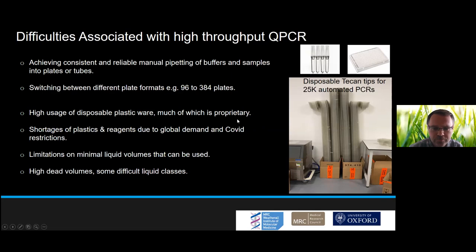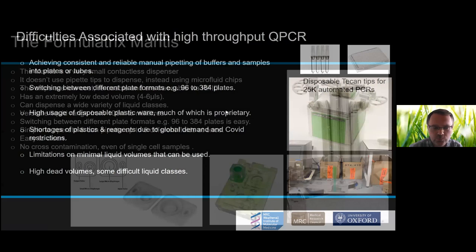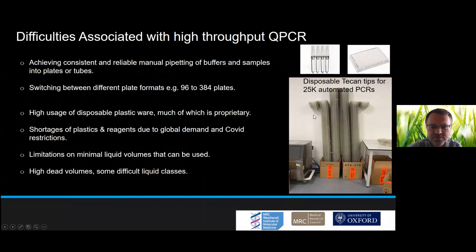Particularly under current conditions, with very high demand for assays, you can see the huge stack of Tecan tips needed for 25,000 automated PCRs — you really do need a lot of plastics. Under pandemic conditions, there are obviously shortages and bottlenecks in supply of the very high amounts of reagents and plastics required for high-throughput testing.